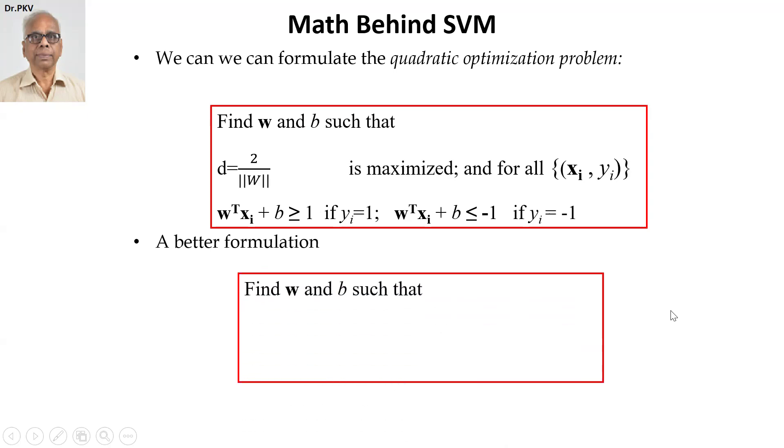So combining this, a better formulation will be find the values of W and B such that the quadratic form half W transpose W pi W is minimized. In other words, D is maximized is same as one by D is minimized. Subject to the constraint, all Xi, Yi for all of them, Yi multiplied by W transpose Xi plus B greater than or equal to one.